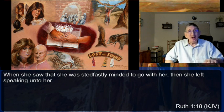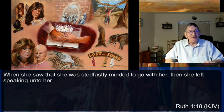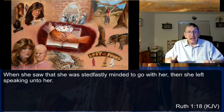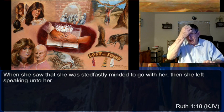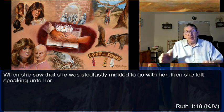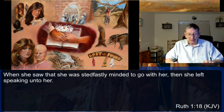Ruth ultimately ended up in the genealogy of our Lord and Savior Jesus Christ. She met a man named Boaz and they ended up getting married. Ruth was actually going to be a surrogate mother for Naomi — to carry on the name of Naomi's dead husband, she needed a male heir. That baby ends up being in the same line leading to Jesus, as we see in Ruth 4:15-17.